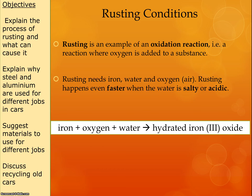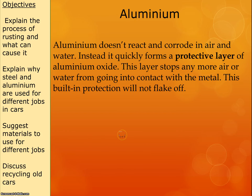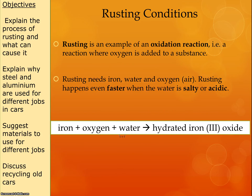They just want you to know what types of things rust. You need to know the word equation for rusting and what type of reaction rusting is. Rusting is an example of an oxidation reaction — we're adding oxygen to the substance — and iron is the substance we're talking about. It's the iron that reacts with oxygen plus water to make hydrated iron(III) oxide.